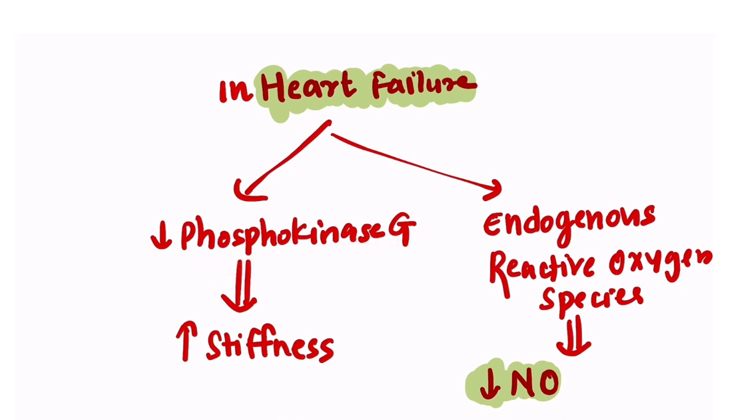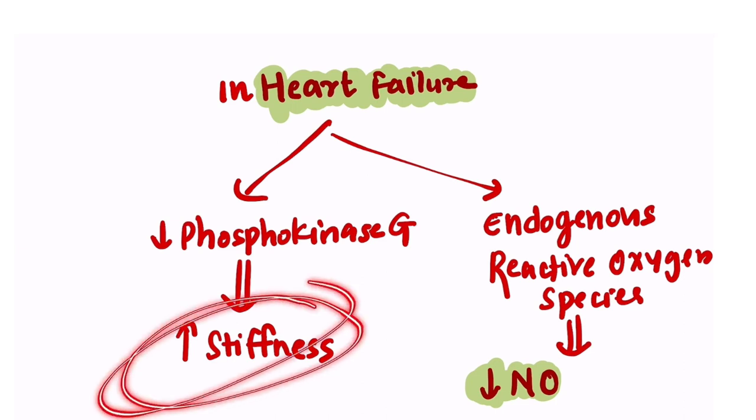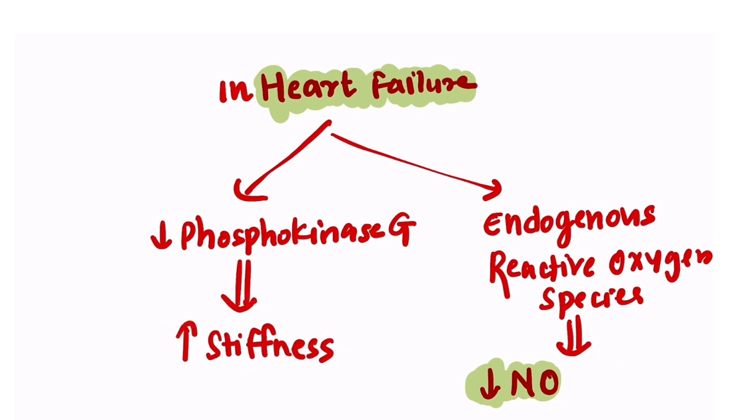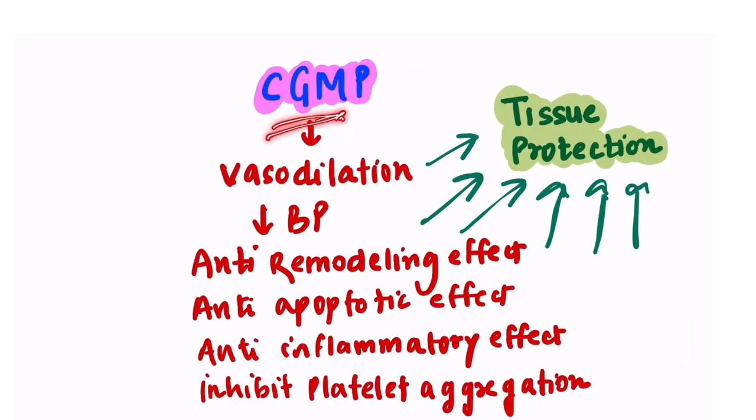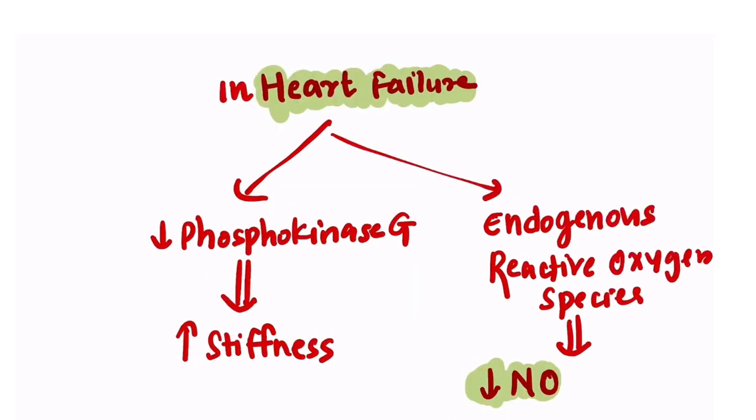So basically, in heart failure, there is decrease in phosphokinase G, and this decrease causes increased cardiac muscle stiffness. Also in heart failure, there is increase in endogenous reactive oxygen species, which causes decrease in nitric oxide. Remember, nitric oxide is important for formation of cyclic GMP, and cyclic GMP has all these important functions which cause tissue protection. And hence, in heart failure, because of decrease in phosphokinase G, there is increased stiffness, and because of decrease in nitric oxide, there is loss of this tissue protection function.